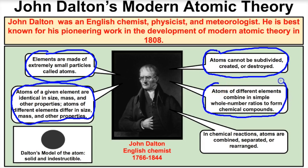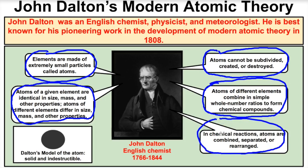Fourthly, Dalton states that atoms of different elements combine in simple whole number ratios to form chemical compounds. For example, the ratio of hydrogen to oxygen in water is two to one — H₂O. It is not H-2.3 to O-1.5. They come in whole numbers, and we know this to be true today. Fifth and finally, John Dalton states that in chemical reactions, atoms are combined, separated, or rearranged — and we know this to be true today as well.